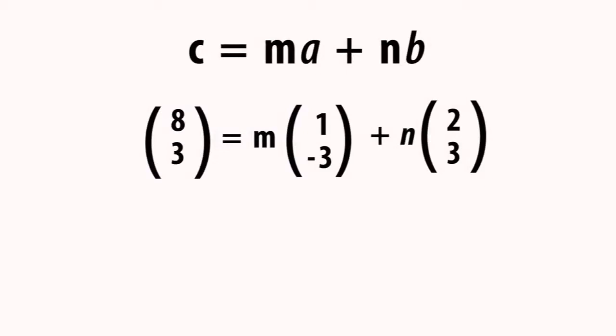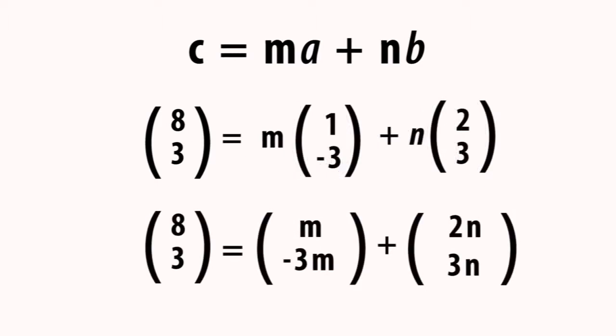Given that C equals MA plus NB, it means you will equate them. Okay. So, (8, 3) equals M(1, -3) plus N(2, 3). You substitute A, B, and C. That's what you have done. Yeah. Okay. And every scalar should be used to multiply the vector. Thank you. So, (8, 3) equals (M + 2N, -3M + 3N). Okay. Then you equate the components.